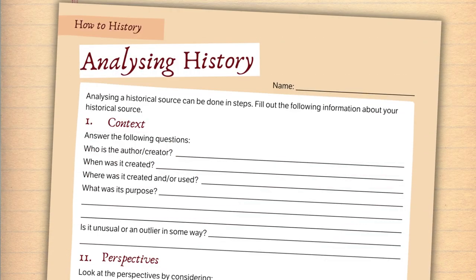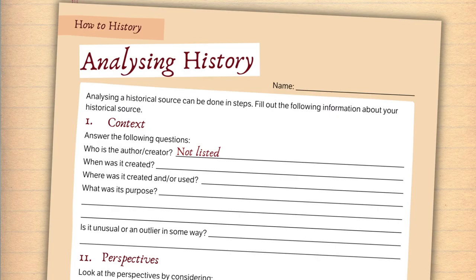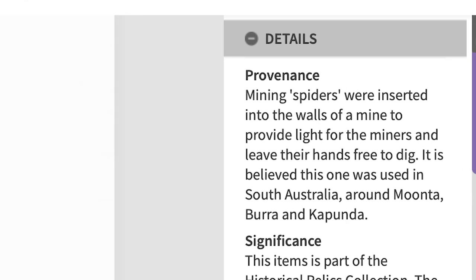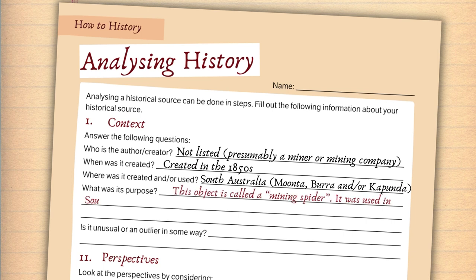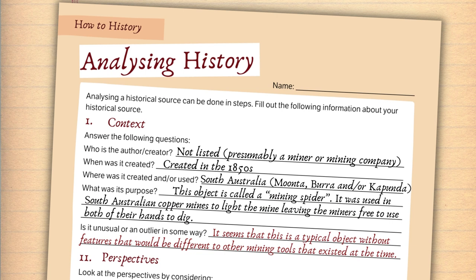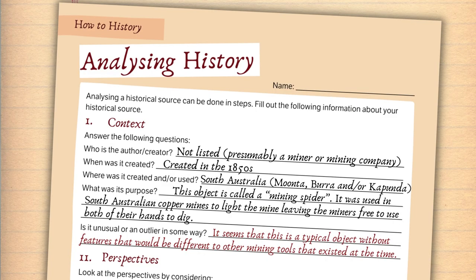Starting with its context, I'm looking for answers to these questions. Who is the author or creator? It's not listed, but presumably a miner or a mining company. When was it created? It was created in the 1850s. Where was it created and or used? South Australia, specifically Moonta, Burra, and or Kapunda. What was its purpose? I can see the purpose written here, but I'm going to make sure to write it in my own words so that I don't plagiarise this site later on. This object is called a mining spider. It was used in South Australian copper mines to light the mine, leaving the miners free to use both of their hands to dig. Is it unusual or an outlier in some way? It seems that this is a typical object without features that would be different to other mining tools that existed at the time. Because this context matches my inquiry question, I can move forward with my analysis.